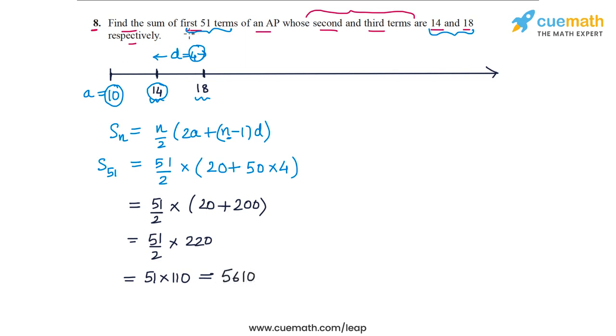So the answer to this question is that the sum of the first 51 terms of this AP is 5610.